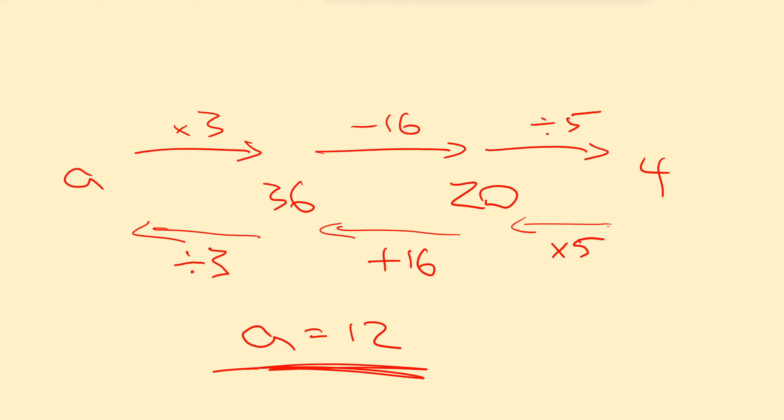So that's the backtracking method. This kind of flowchart idea can prove quite helpful. So we start at the end and we backtrack. We work backwards by doing the opposite of each operator. Step by step until we get back to what we want to find out.